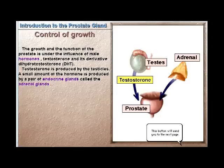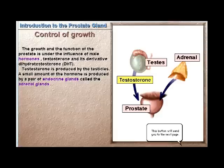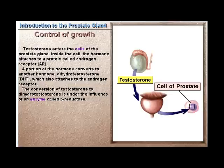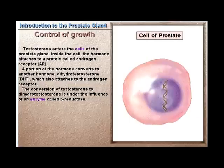The growth and function of the prostate is under the influence of male hormones — testosterone and its derivative dihydrotestosterone (DHT). Testosterone is produced by the testicles. A small amount of the hormone is also produced by a pair of endocrine glands called the adrenal glands.